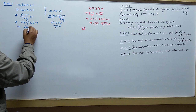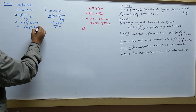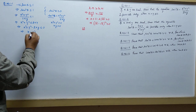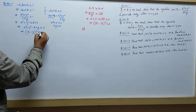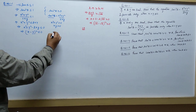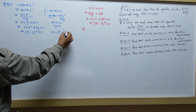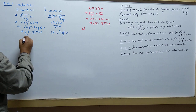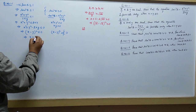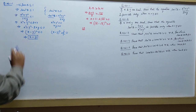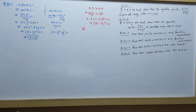So x squared plus y squared minus 2xy is greater than or equal to 0, which means x minus y whole squared is always a square quantity and cannot be negative. This implies x is equal to y — that is, the equation will be possible only when x is equal to y.